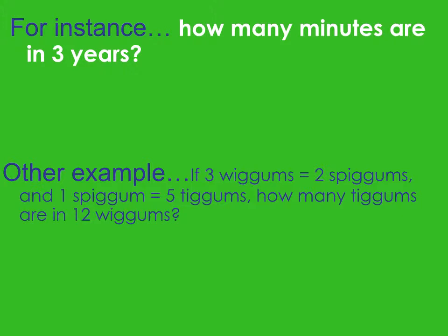Another example is the one we saw today — and it's totally fake. If 3 Wiggums equals 2 Spiggums and 1 Spiggum equals 5 Tiggums, how many Tiggums are in 12 Wiggums? That would just be a two-step problem.